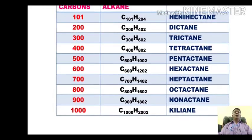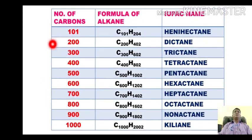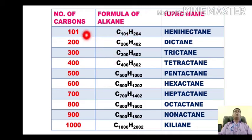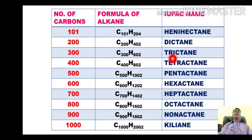For an alkane with 101 carbons, the formula is C101H204 and its name is henhectane — 'hen-' for one and '-hectane' for one hundred. For the alkane with 200 carbons the name is dictane, for 300 it is trictane, for 400 it is tetractane, for 500 it is pentactane, and for 600 carbons — formula C600H1202 — it is hexactane.